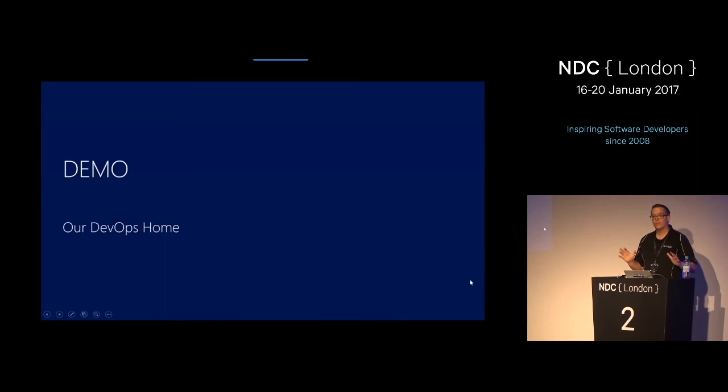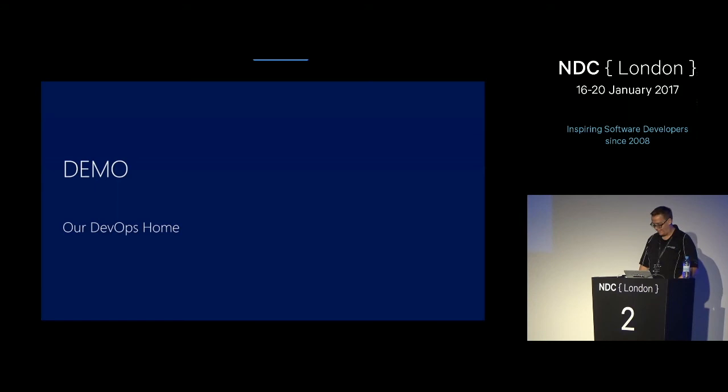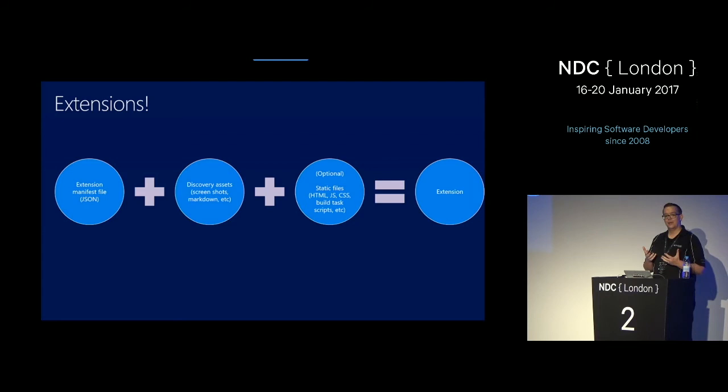That was a short introduction to our DevOps home — the way we like to use VSTS: dashboards, markdown files, Git, Git Flow, pull requests, everything. Another part which is really interesting and which I want to share with you is how we build extensions, because that's real tooling that you can probably use in your own projects, and I hope we can contribute something to the community this way.